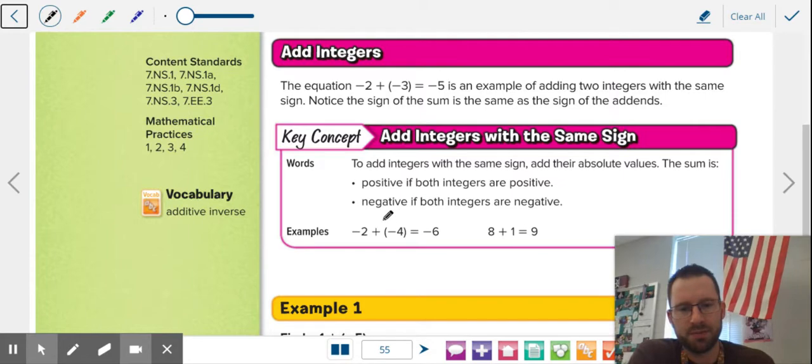Now if you have two negatives, add them up, keep it negative. Right? You go to the mall, spend $2 on a piece of candy, spend $4 on a big pretzel at Auntie Anne's. You spend $6. Boom. Done.